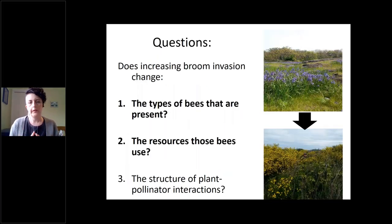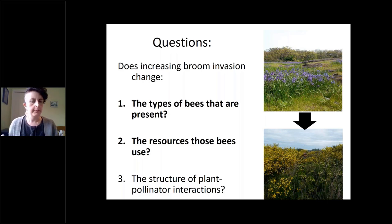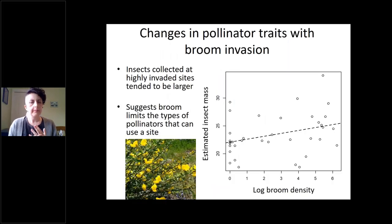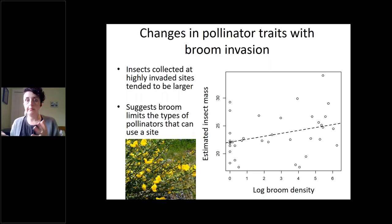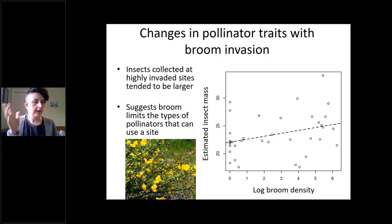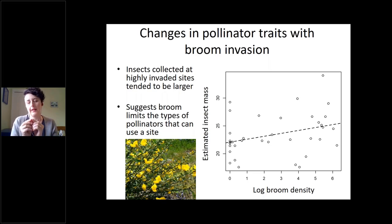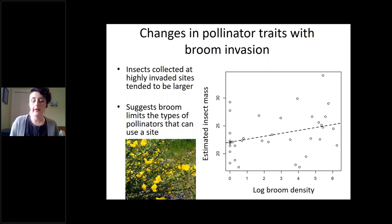I'll briefly address three questions we asked with this data. First, we examined whether bees were bigger at broom-invaded sites — you might expect this because only large bees can effectively forage on broom. And indeed, as broom density increases across our sites, the average mass of the flower-visiting insect became larger. This suggests that broom is filtering or limiting the types of pollinators that can use resources at a location. If you're a tiny little bee, you simply can't get resources from scotch broom, so as it displaces native plants those small bees were using, you wind up with only the big bees left.